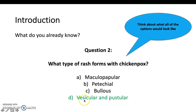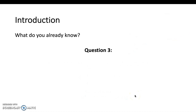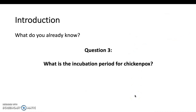Vesicular is a raised lesion filled with fluid, which is usually clear. Pustular is the same but the fluid is pus instead of clear. There will be a mixture of both in the rash. Question three: what is the incubation period for chicken pox?